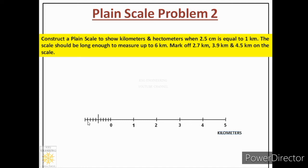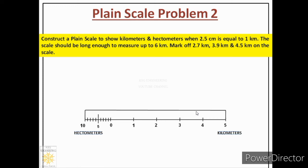We now have 10 hectometers shown on the left section, so this is the hectometer scale. We write '10' and below it label 'hectometers' using guidelines and Gothic lettering. We also label the midway marking. To complete the body of the scale, we draw a line of 1 centimeter at each end, then connect these with continuous thick lines and draw thick vertical lines at all division markings. Below the scale we mention the RF and LOS in Gothic style.